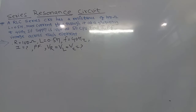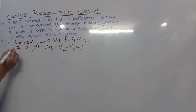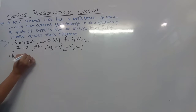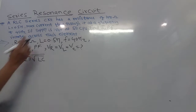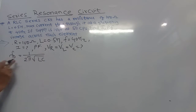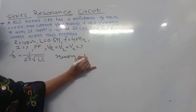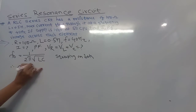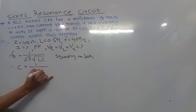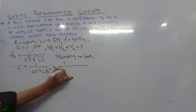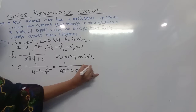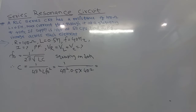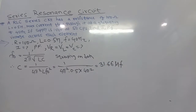We start by calculating the resonance frequency, denoted f0, which in a series circuit equals 1 divided by 2π√(LC). We use this because we don't have the value of capacitor C. Squaring both sides, C equals 1 divided by (4π² × L × f0²). Substituting L = 0.5 and f0 = 40: C = 1 / (4π² × 40² × 0.5) = 31.66 microfarad.